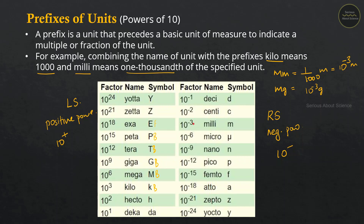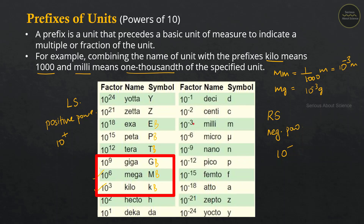To recap the positive powers of 10: 10 raised to 3 is kilo, 10 raised to 6 is mega, and 10 raised to 9 is giga.